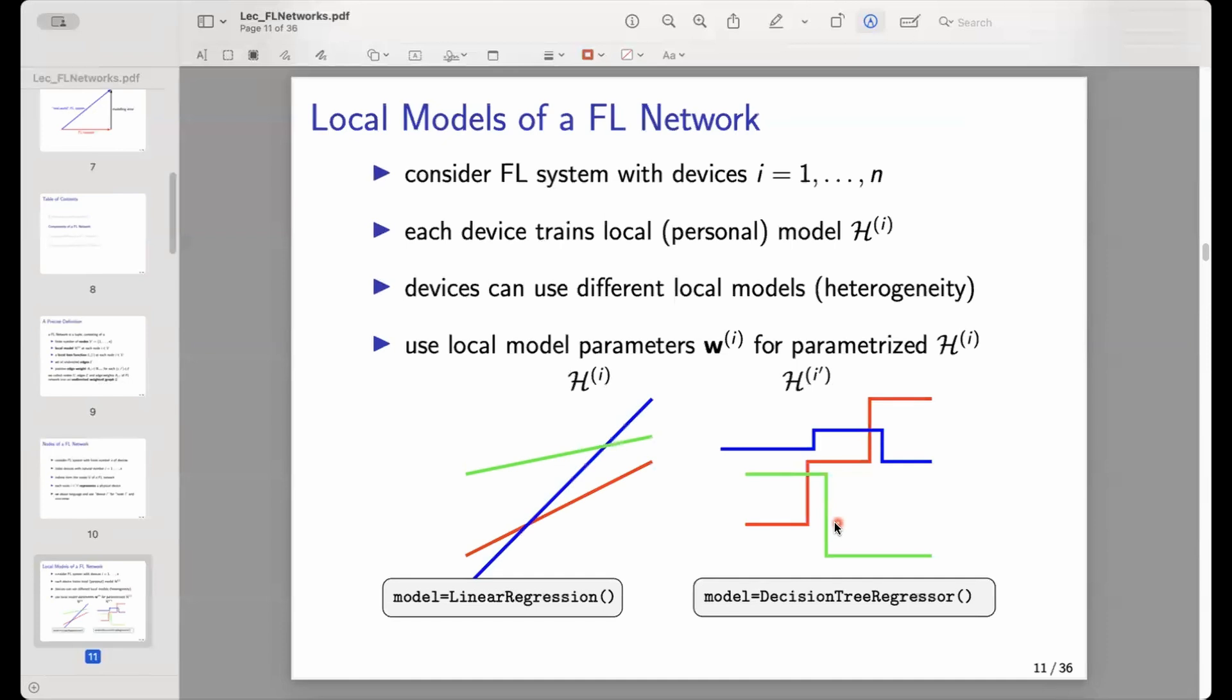Now that each node represents a device, we are not really interested in technical detail about a device. We're not interested what operating system they're running, which Android version, or what hardware configuration does a device have, how many megabytes RAM working memory, main memory does a device have. This is where we abstract, and the essence of a device is within this course that it can train a model.